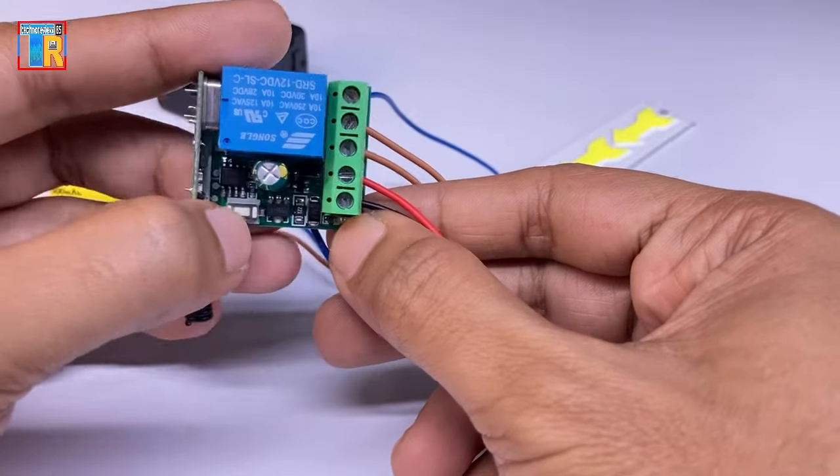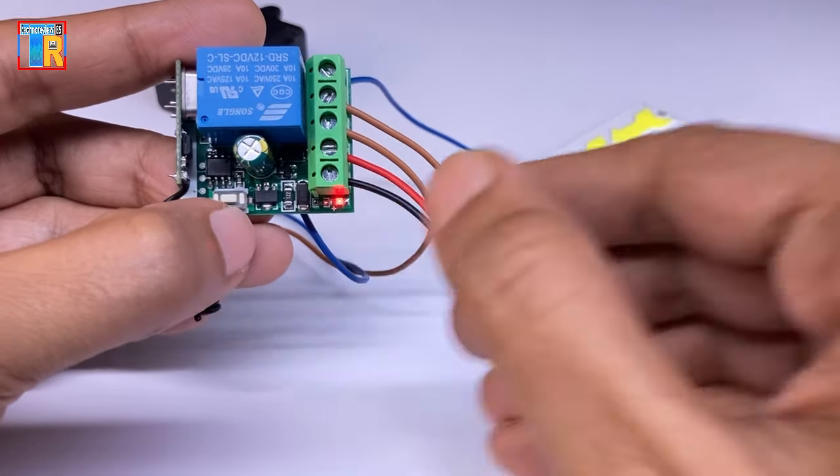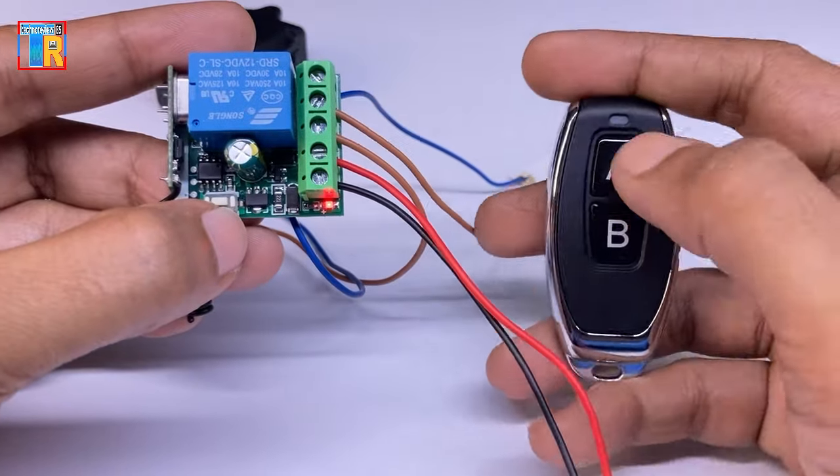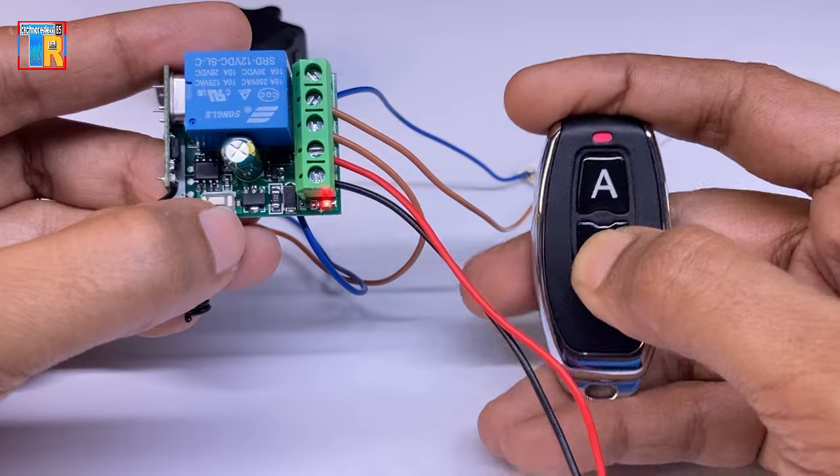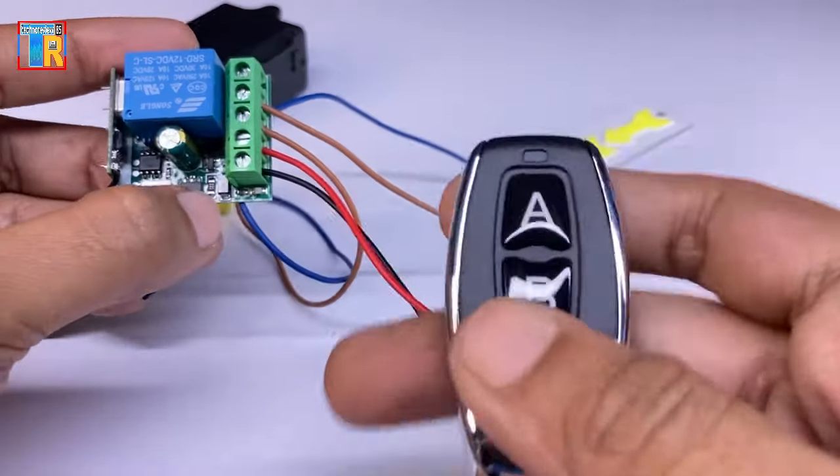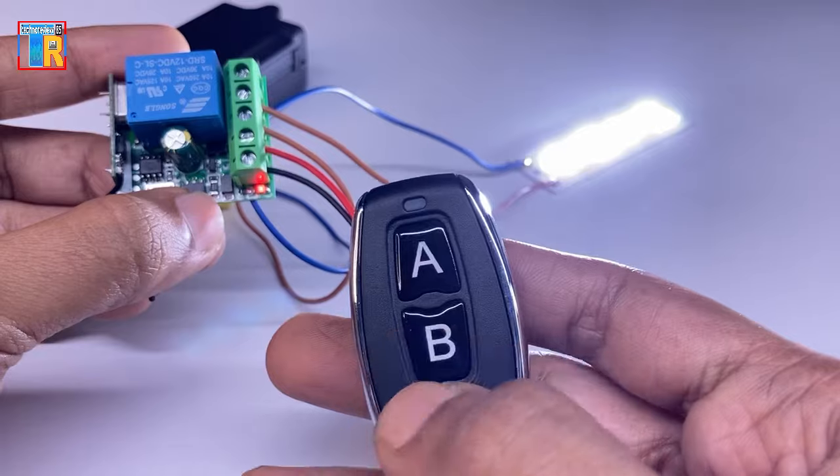The third mode is the latch mode. To select this mode you have to press the switch three times and then select A and B on the remote. Now pressing A once turns the relay on and pressing B turns it off.